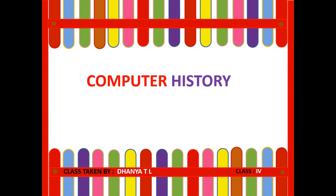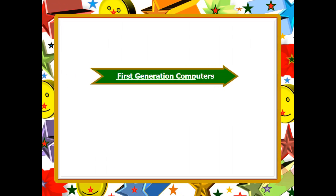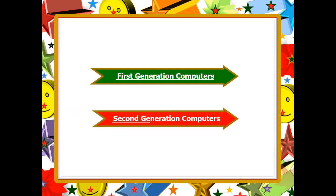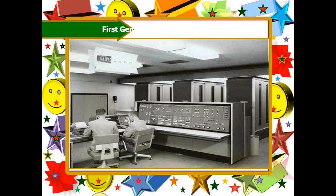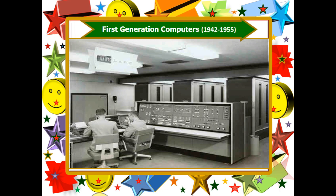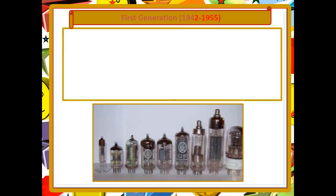Computer history part 5.1 - Generation of a computer. Hello children, in this video we are going to explain what are all the main components and features used in first generation computers and the second generation of computers. So let us learn one by one in detail. First generation of computers existed from 1942 to 1955.